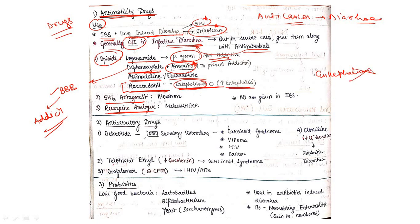Next, 5-HT3 antagonist includes alosetron. Reserpine analog includes mebeverine. All these drugs are given in IBS.